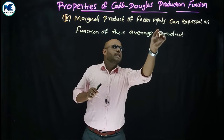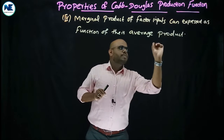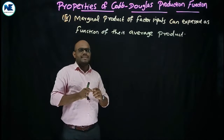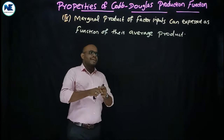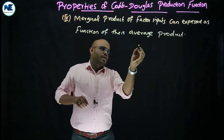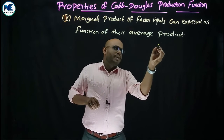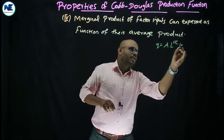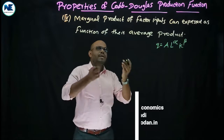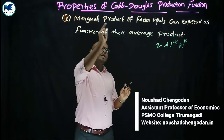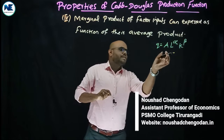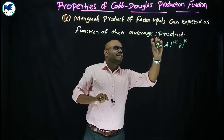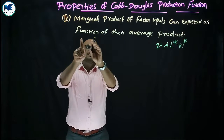The marginal product of factor inputs can be expressed as a function of their average product — this is the fourth property of the Cobb-Douglas production function. The Cobb-Douglas production function is Q = A · L^α · K^β, and with two factors of production, labor and capital, we can express the marginal product of each as a function of their average product.